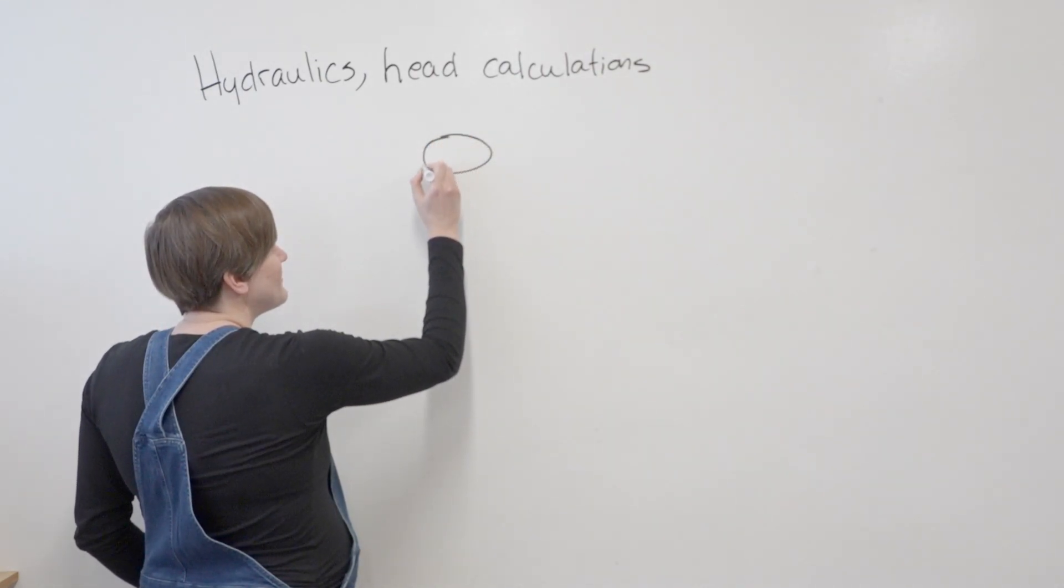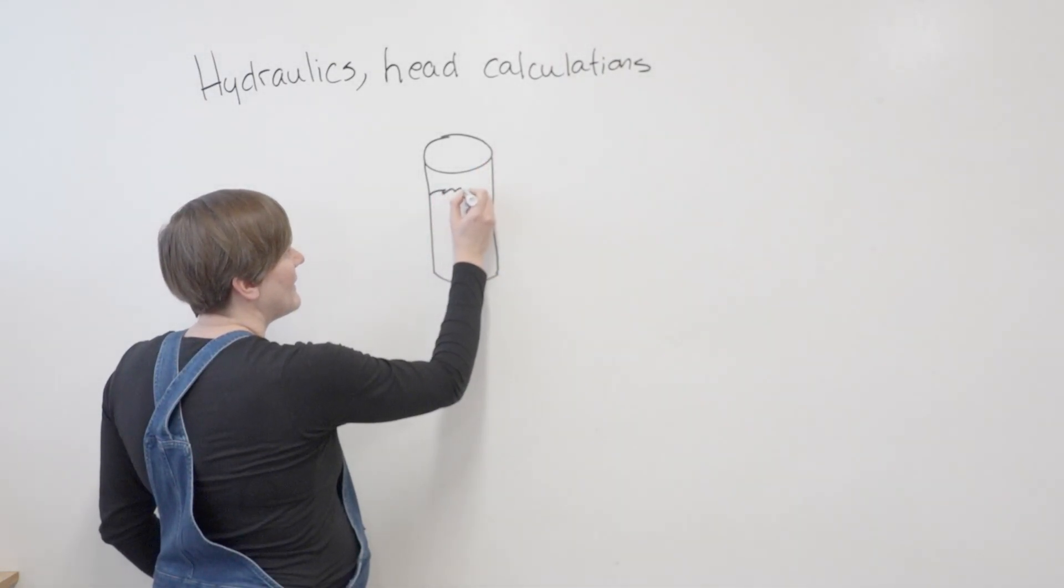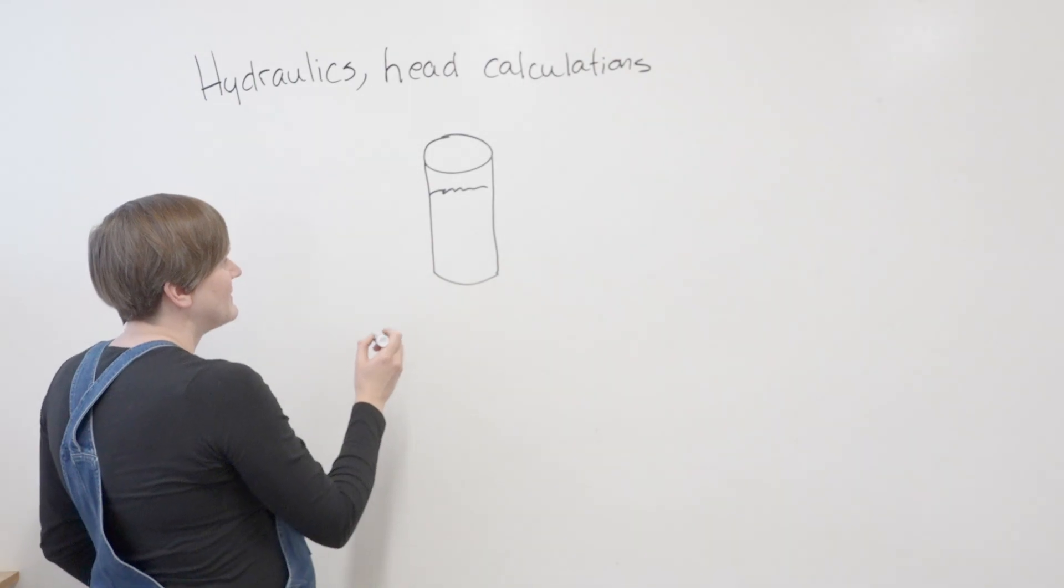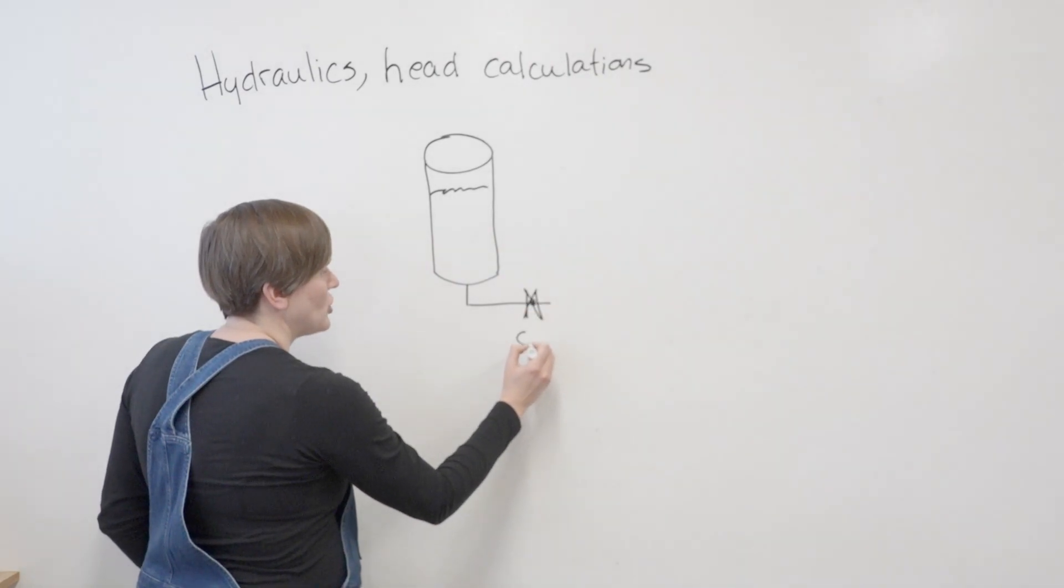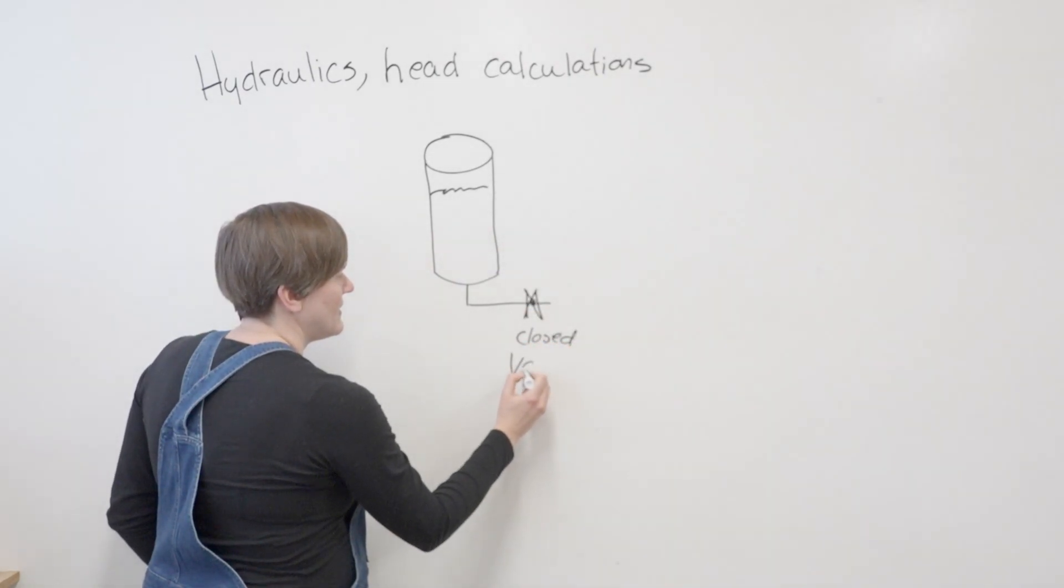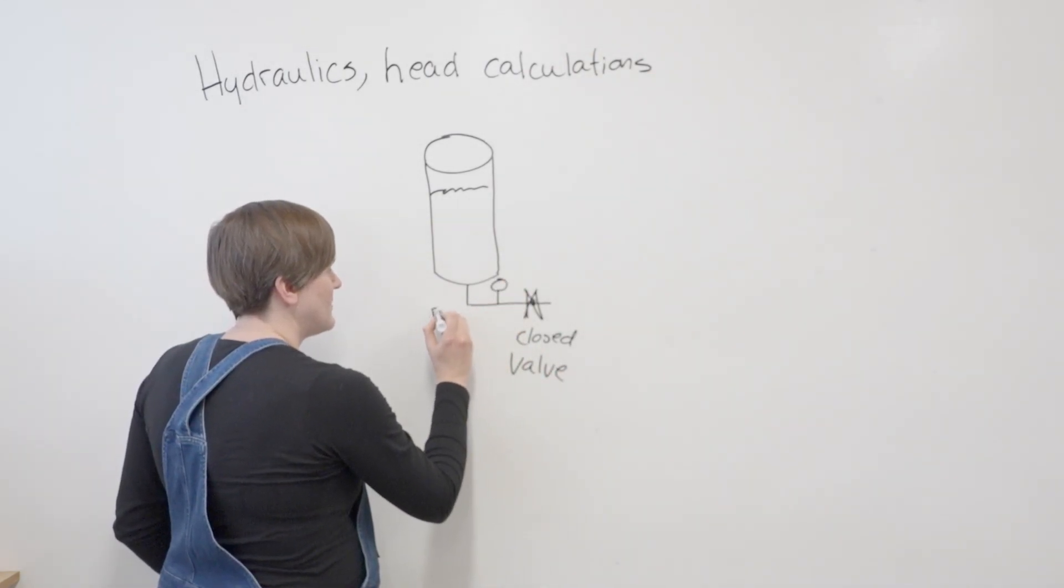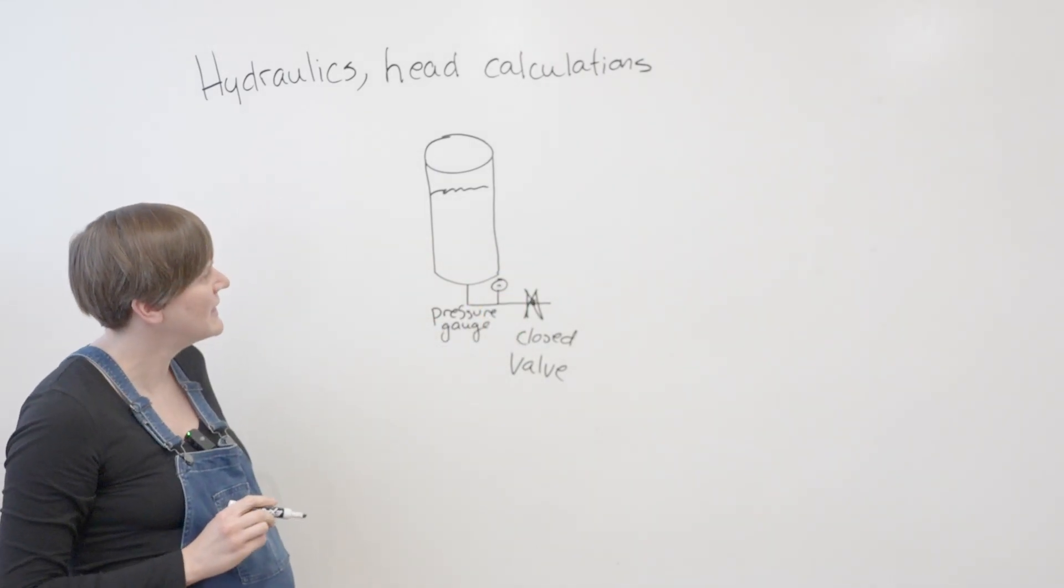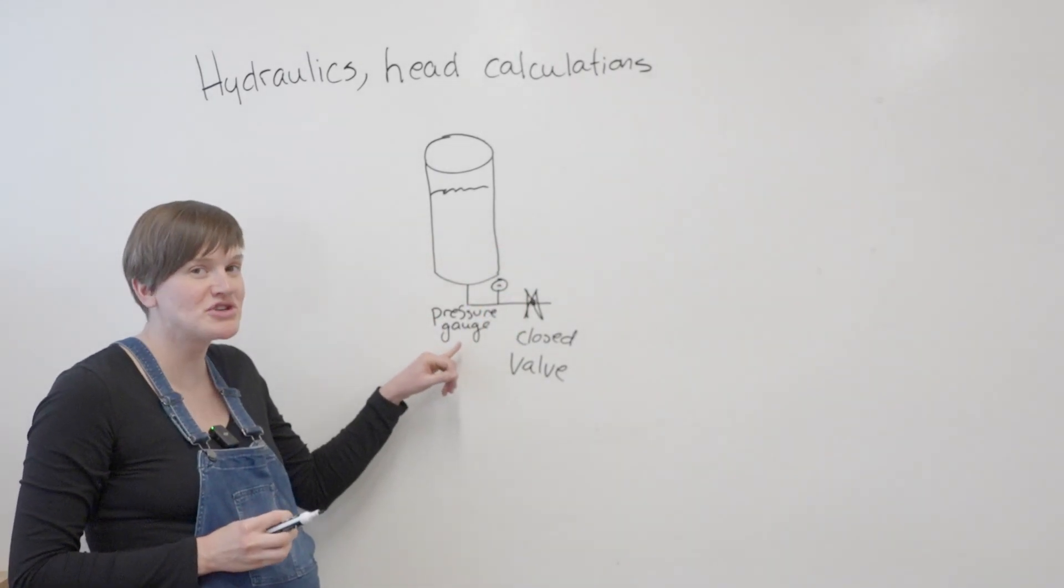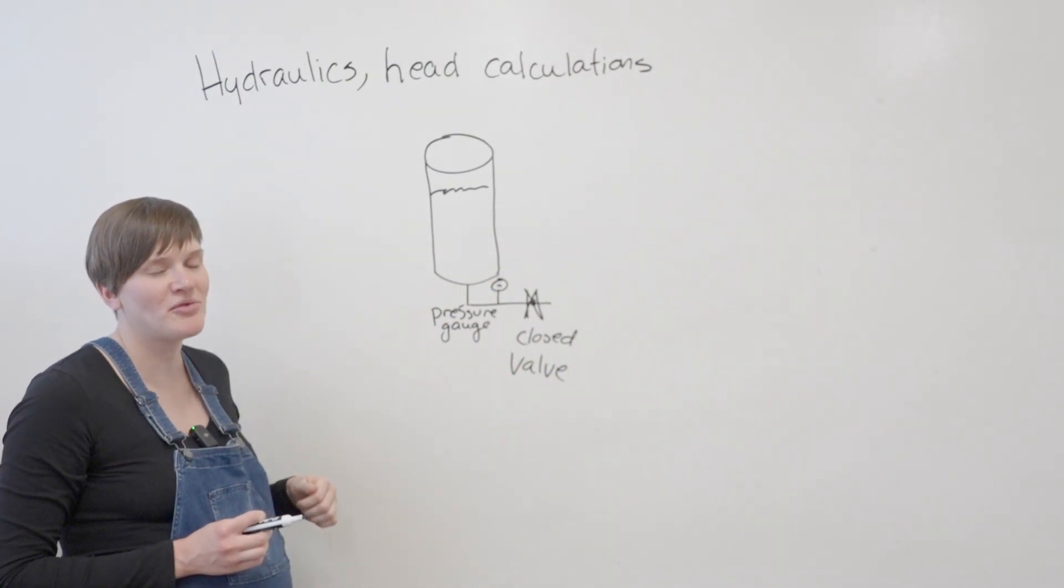So first I've got a question for you. If you have a tank that has water in it, it's got a pipe coming out the bottom, and a closed valve here, and here you've got a pressure gauge. Are you going to be reading a pressure on that gauge? Closed valve, no water is flowing, but you've got a volume of water in this tank.